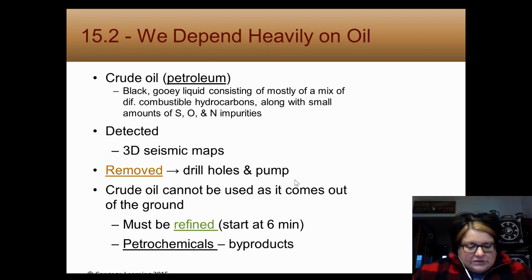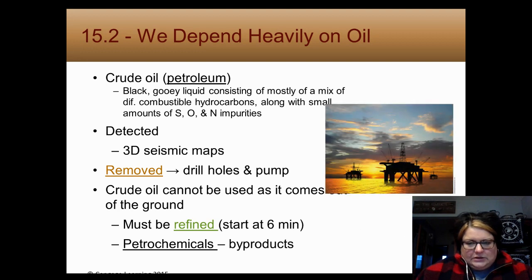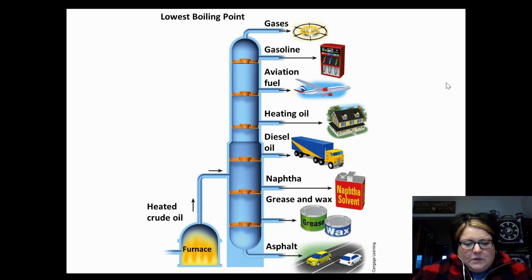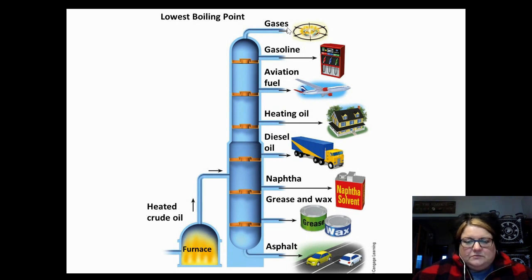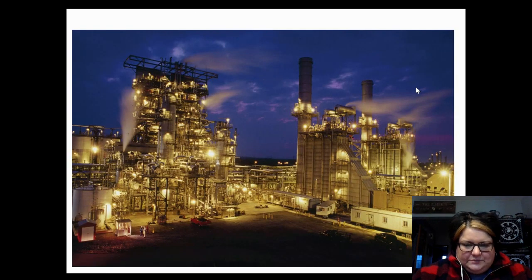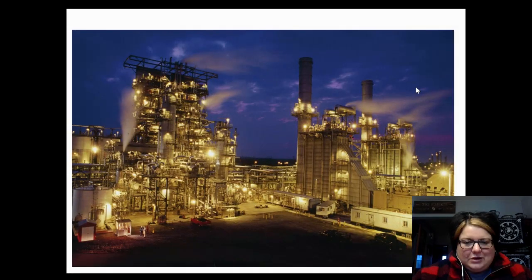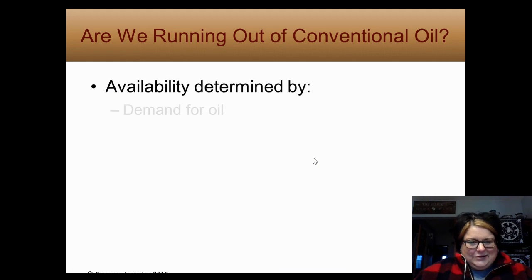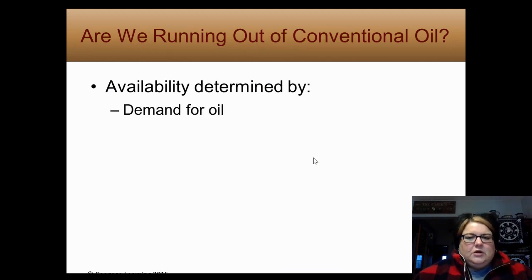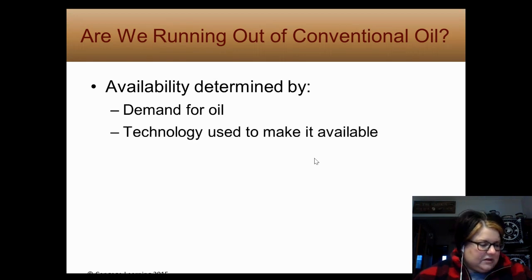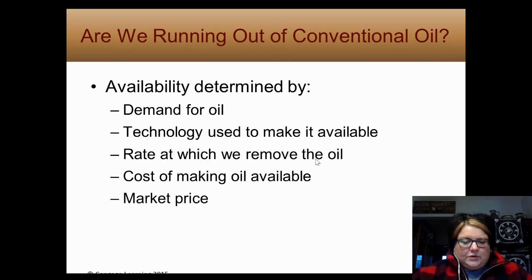Number seven asks about five factors contributing to oil availability. Looking at the refinery diagram: crude oil is heated and as the boiling point gets higher and higher, you get purer and purer products — asphalt is the crappy bottom stuff and natural gas from petroleum is the best. Back to oil availability: first is demand — economic supply and demand. Are we running out? It depends how much we need and the technology to make it available, which affects the rate of removal and cost. Right now cost is dropping because of COVID-19 — people aren't driving, demand is dropping, so price is dropping even though supply isn't really changing.